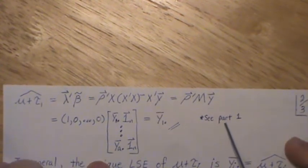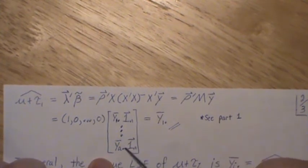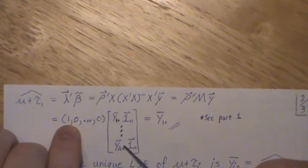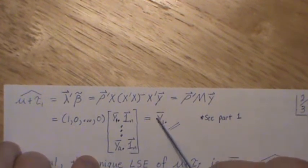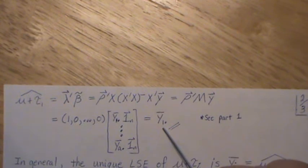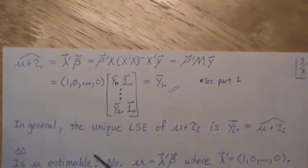Look at this. Y is, it doesn't change. It's unique. It's the responses that we observe. However, ρM is unique for any ρ that we pick. So this ends up being a unique estimate. If you look at part 1, it creates this treatment mean vector. We're just picking off the first observation, which is the mean for group 1. That's our unique least squares estimate.